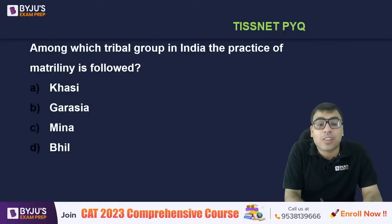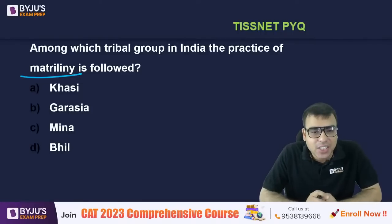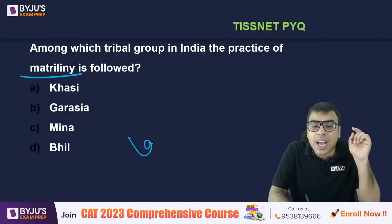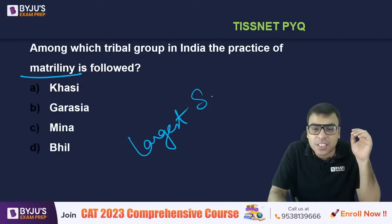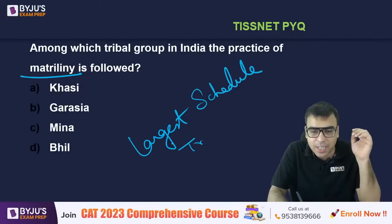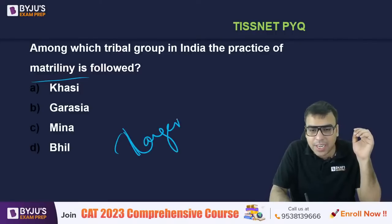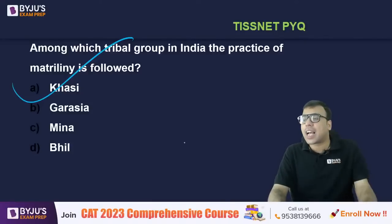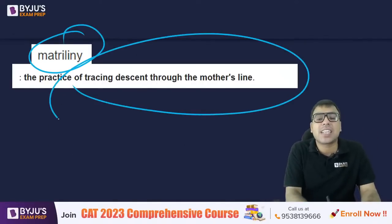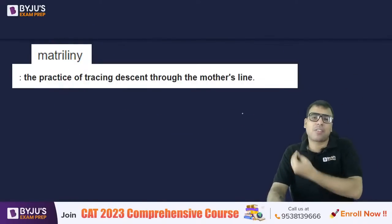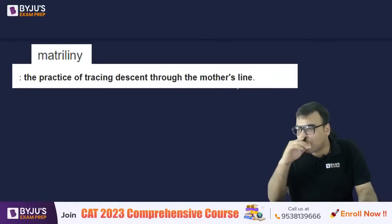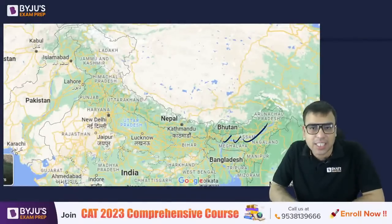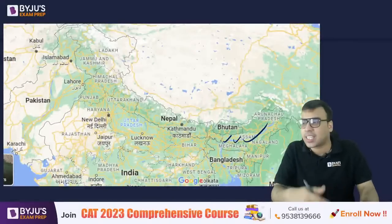Among which tribal group in India is the practice of matriliny followed? Options: Khasi, Garasia, Mina, or Bhil. Matriliny means tracing descent from the mother's side instead of the father's. In Meghalaya there are three famous hills — Garo, Khasi, and Jaintia — named after the tribes living there. The Khasi tribe is famous for practicing matriliny. Homework: find out which is the largest Scheduled Tribe by population in India.